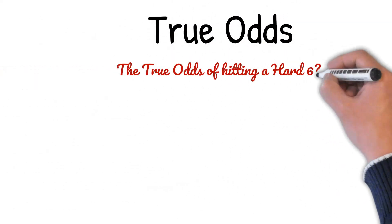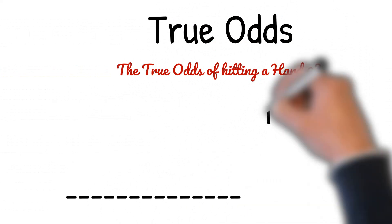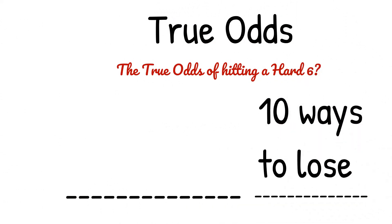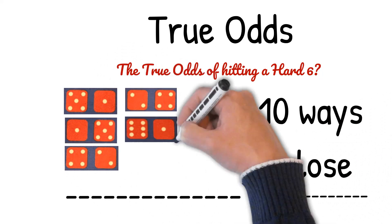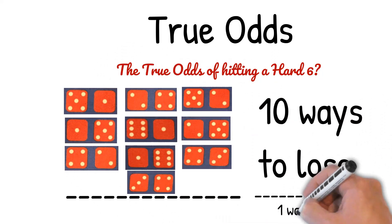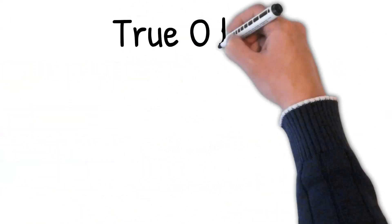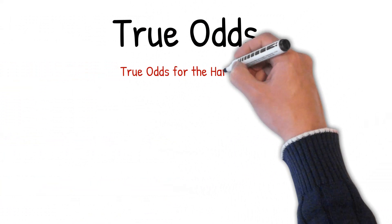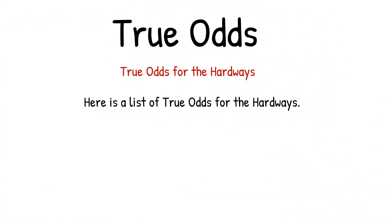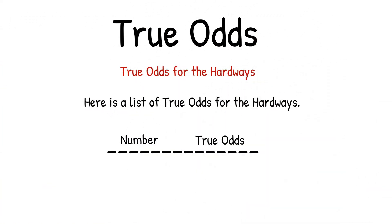The true odds of hitting a hard 6: 10 ways to lose, 1 way to win. The easy 6 combinations are 5-1, 1-5, 4-2, 2-4, plus the seven combinations 6-1, 1-6, 3-4, 5-2, 2-5, and 2-4 — against the only way to win, which is a pair of 3s. Here is a list of true odds for the hard ways: hard 6 or 8 is 10 to 1; hard 4 or 10 is 8 to 1.